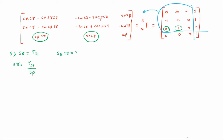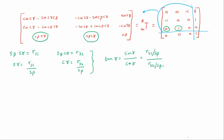Sine beta cos gamma would be R third row second column, hence our cos gamma would be R32 over sine beta. Using these two equations, we can deduce that our tan gamma would be equal to sine over cos. Sine beta cancels out, giving gamma as being equal to arc tan of R31 over R32. Gamma is therefore equal to tan inverse of R31 over R32, and tan inverse of 0 is approximately equal to 0 degrees.